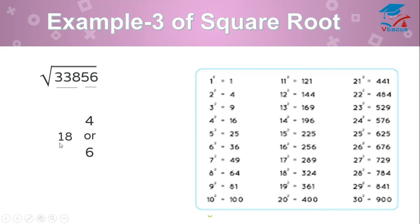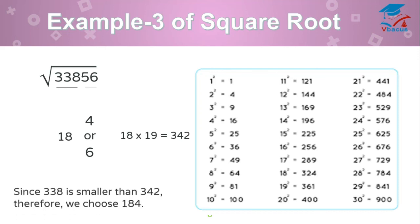Now, for unit digits, you have to multiply 18 to its next number that is 19. 18 times 19 are 342. Compare the numbers. Since 338 is smaller than 342, therefore, we choose 184. So, square root of 33856 is 184.